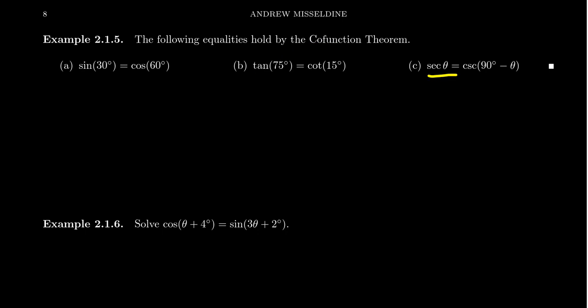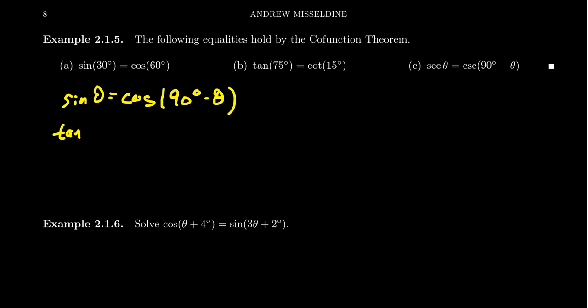Likewise, tangent of 75 degrees equals cotangent of 15 degrees, because 75 and 15 are complementary angles whose sum is 90 degrees, and tangent and cotangent are complementary functions. More generally, secant of theta equals cosecant of 90 degrees minus theta. These are the complementary identities: sine of theta equals cosine of 90 degrees minus theta, tangent of theta equals cotangent of 90 degrees minus theta, and so on for all six trigonometric functions.